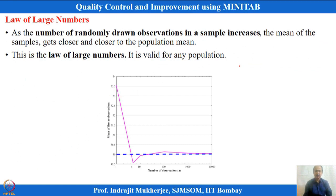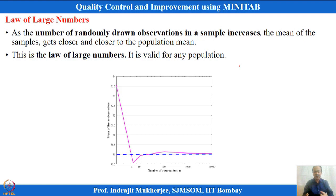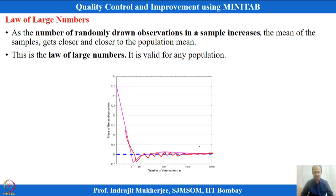One important theory is the law of large numbers. This means that if you have a large number of observations, the mean of the samples gets closer and closer to the population mean. The overall fluctuation in sample means converges to the population mean, and more and more independent observations you take, the average tends towards the population average.